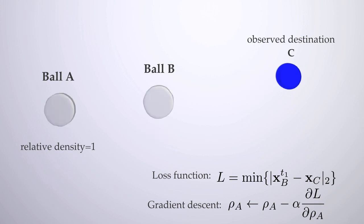Such inference can be considered as an optimization problem. Let the loss be the final distance between B and C. We can use gradients of the loss function with respect to the density of ball A to solve this problem. After several gradient descent iterations, we find the optimal density to be 2.26.